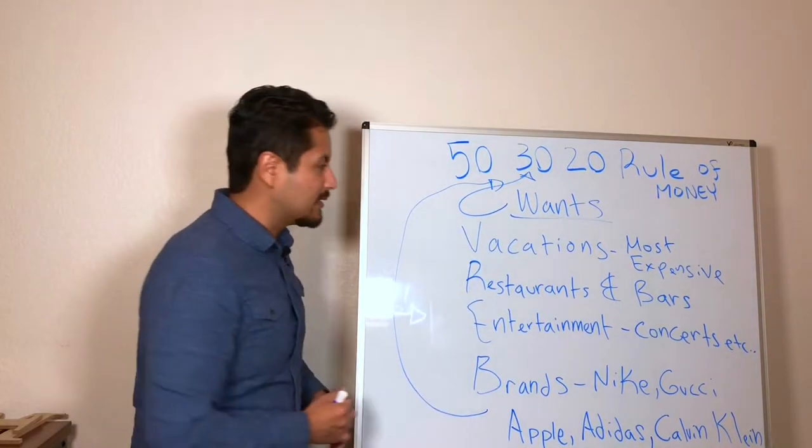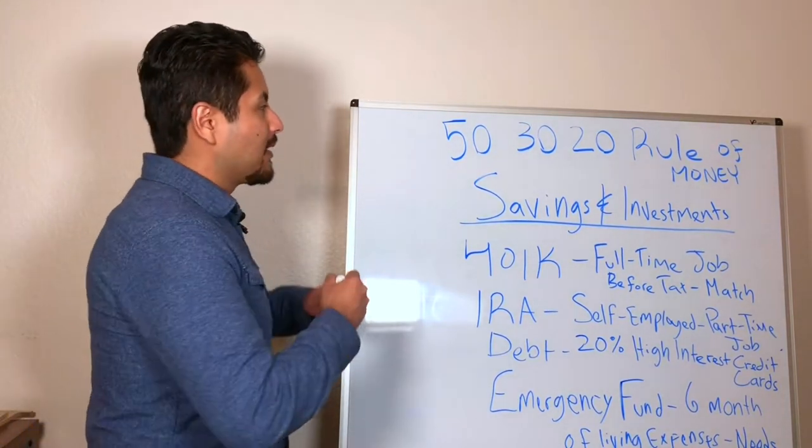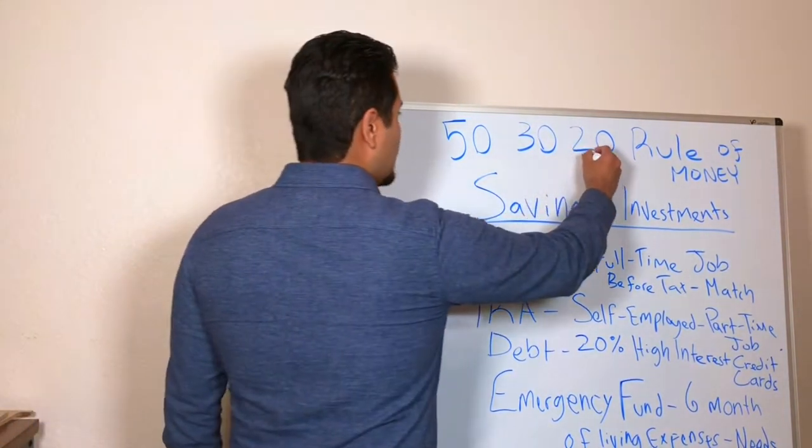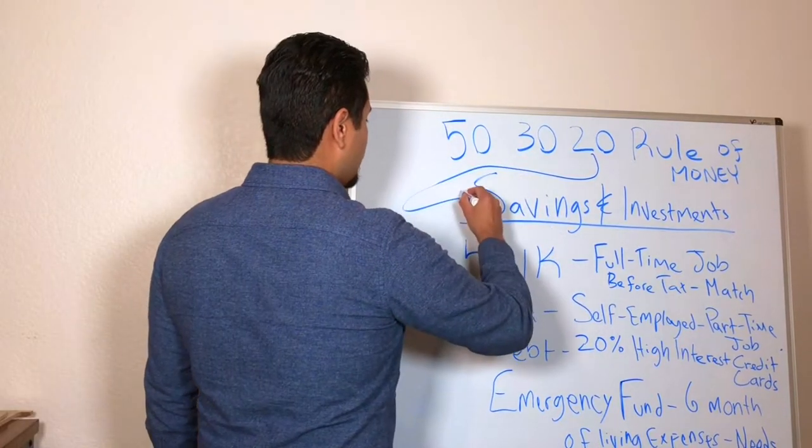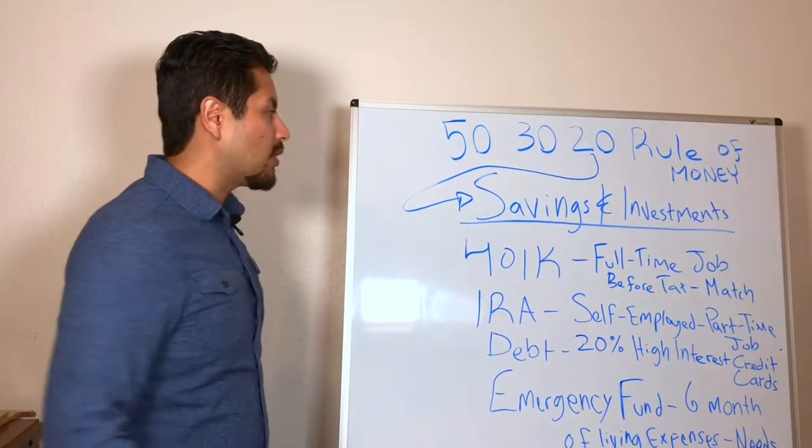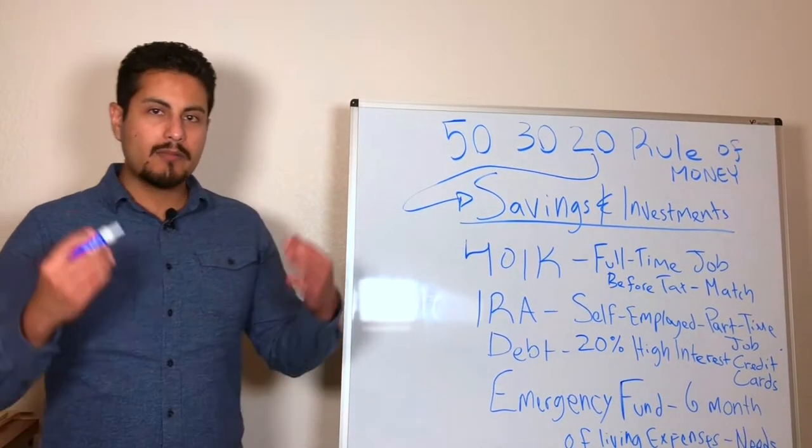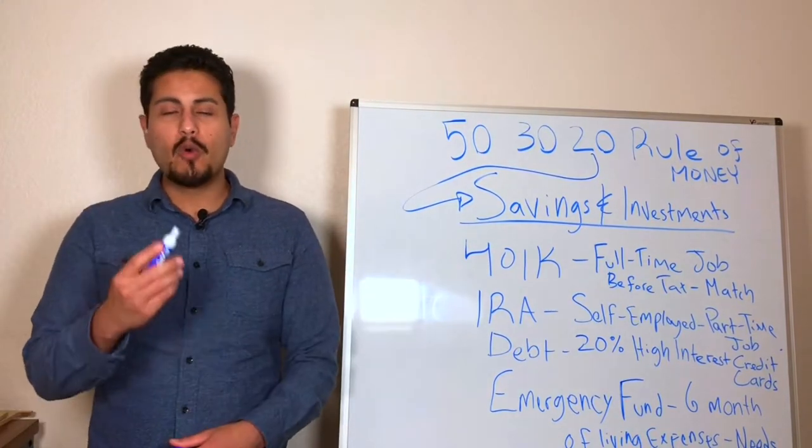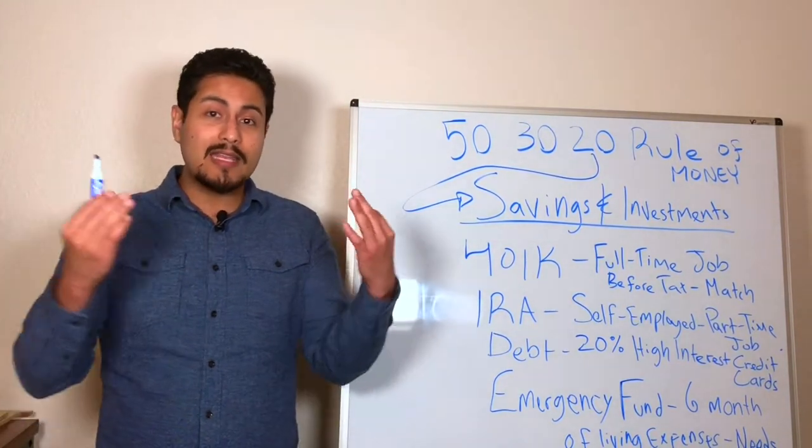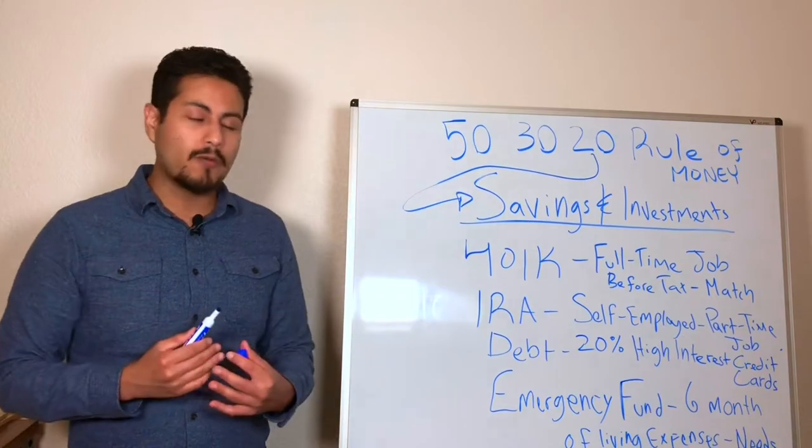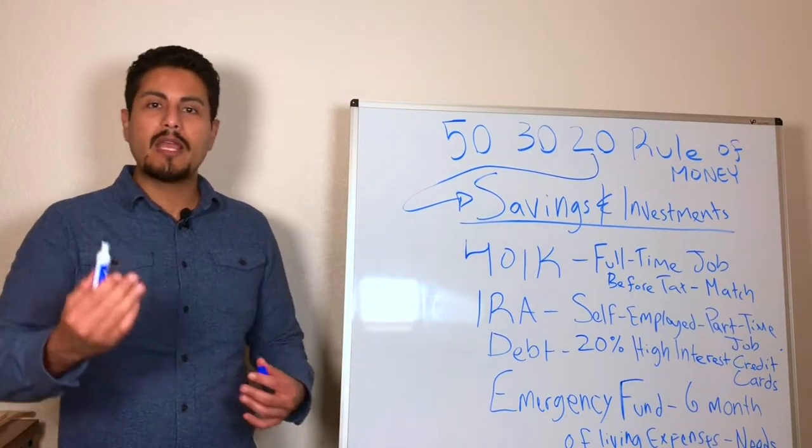Alright guys, now we're moving to savings and investments. Now 20% of our income should be going to savings and investments. Why is this important? Well guys, you know, you don't want to be working 10 years, 20 years, 30 years, and then at the end of that have nothing to show for. You know, it's important that we're saving, we're investing in ourselves, we're investing for our future.